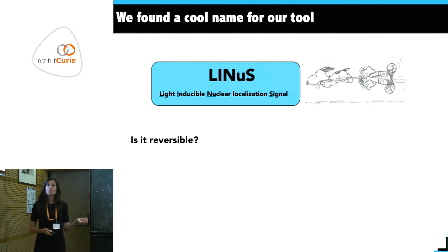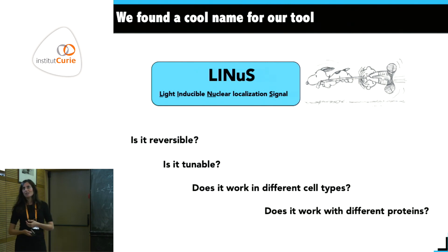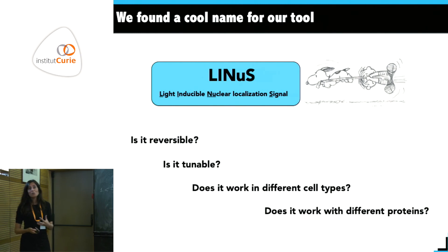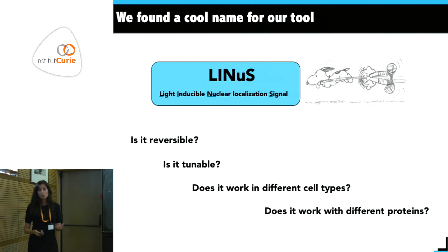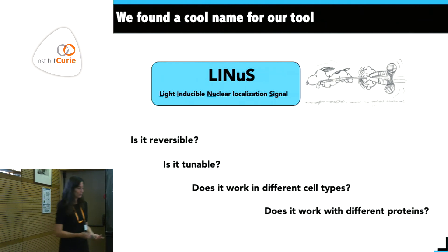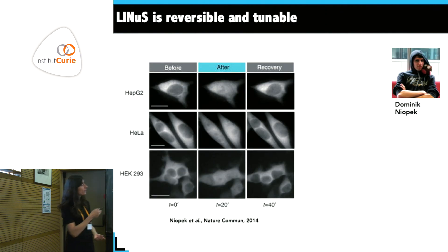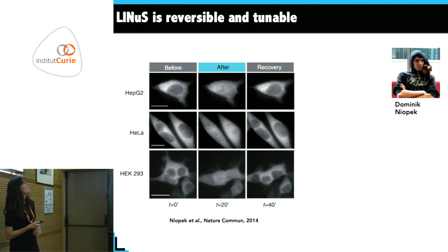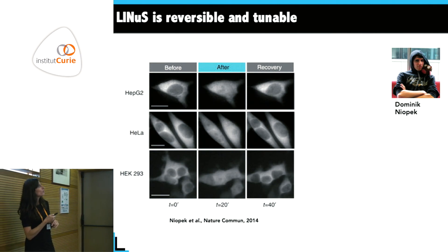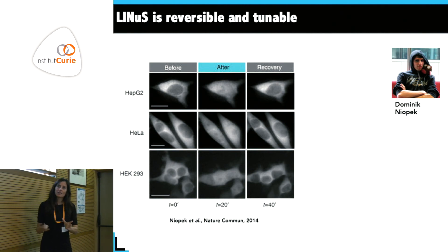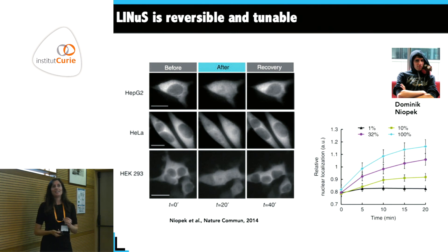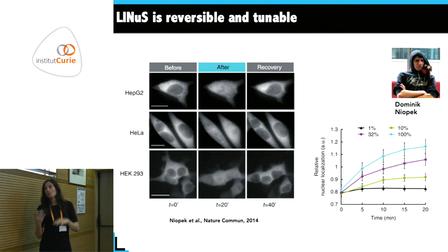When you make a tool you have to show it is reversible, tunable, works in different cell types, and is functional on a protein with a real biological function rather than just mCherry. Dominic — back then my student, now a group leader — picked up the project and showed the tool works in different cell lines, though not identically, reflecting the fact that different cells have different amounts of importin alpha, beta, and export receptors.